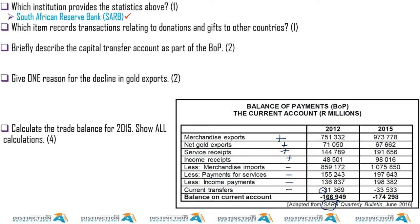Income receipts are payments coming into South Africa — for example, for labor. Merchandise imports: we're buying things from other countries, so we subtract. Payment for services: they render services to us so we pay for it — subtract. Income payments: we're paying for labor to foreign nationals — subtract.